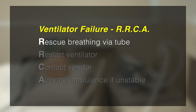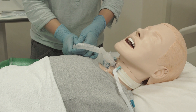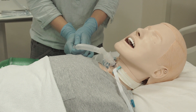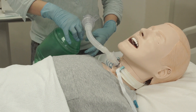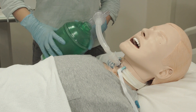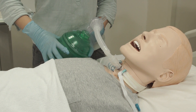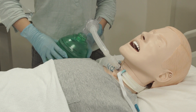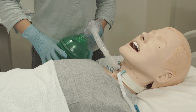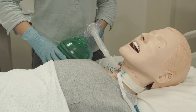R is for rescue breathing. Disconnect the ventilator tubing and connect the ambu bag to the tracheostomy tube. You may use a tracheostomy tube adapter for easy connection. This will deliver about 16 breaths per minute.